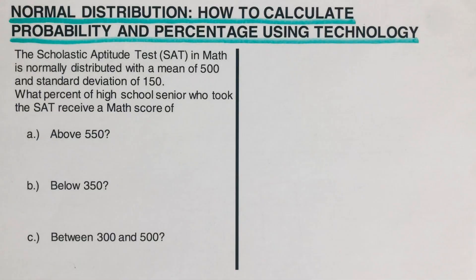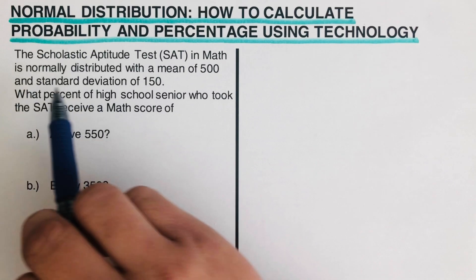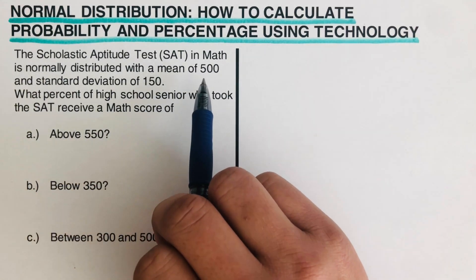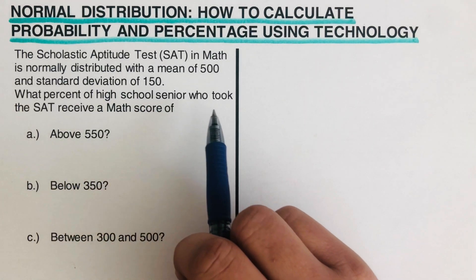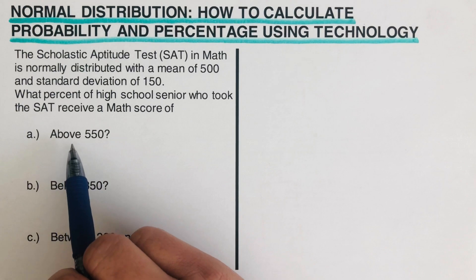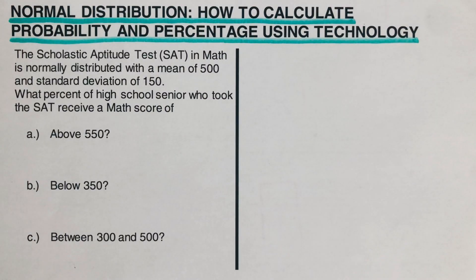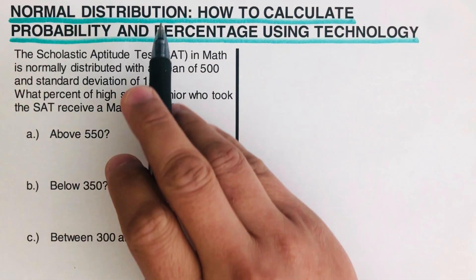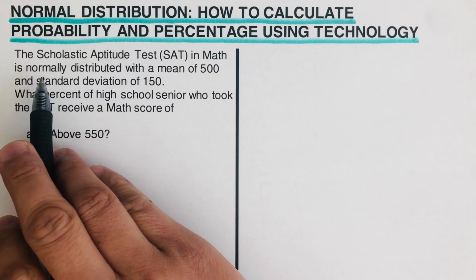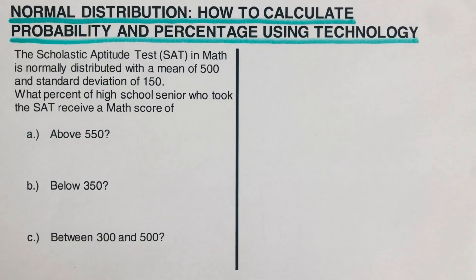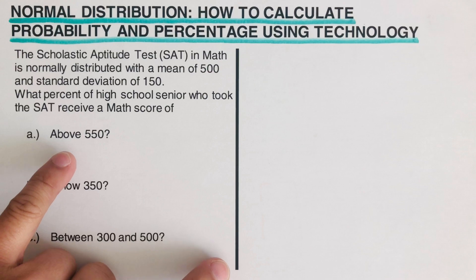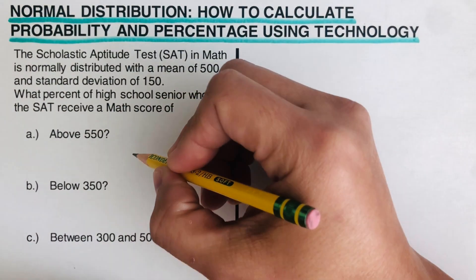Let's take the first example. The SAT test in math is normally distributed with a mean of 500 and a standard deviation of 150. What percent of high school seniors who took the SAT received a math score above 550? Since the problem states the data is normally distributed, we can use the normal distribution curve. Let's draw the normal curve for this.